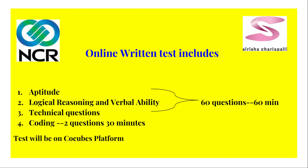The online written test includes aptitude, logical reasoning, verbal or English communication, technical MCQs, and coding. From aptitude, logical reasoning, verbal, and technical MCQs, the number of questions will be 60 and the duration is 60 minutes. For coding, there are two questions to attempt in 30 minutes. NCR Corporation uses CoCubes as a platform for the exam, so practice on that platform as much as you can.